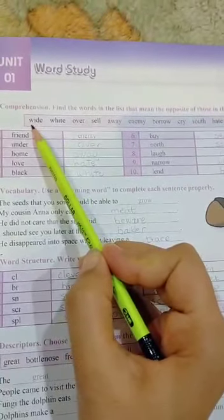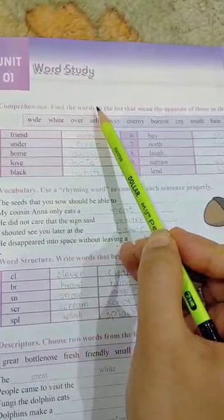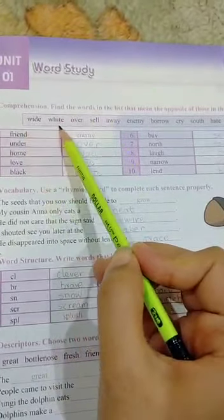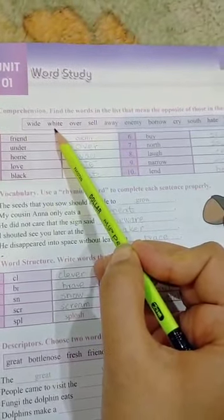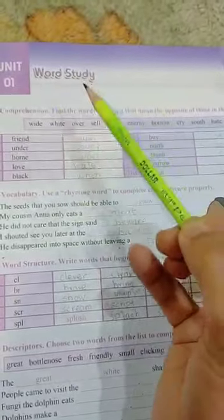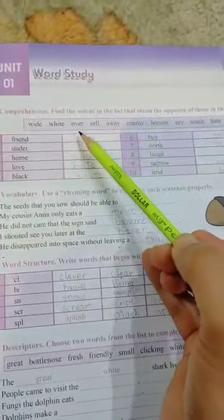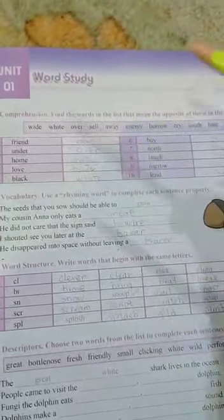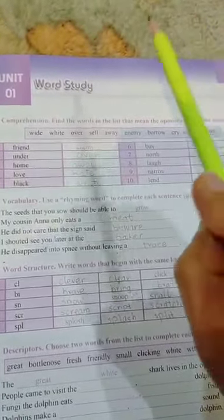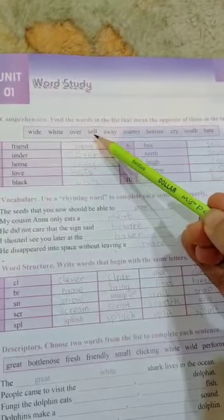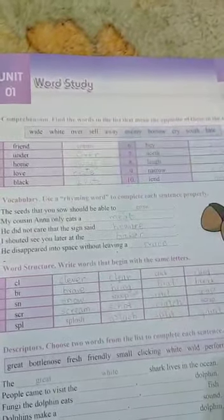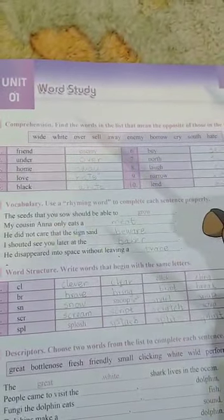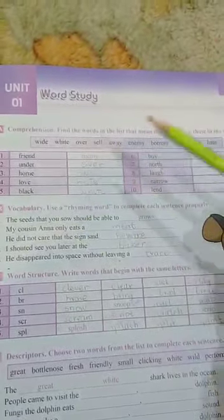White means the very large area. White is a color. Red, blue, green, white. Over means above, like something on the table. Over the table means on the table. Sell, to sell out something, to give something to someone and take the money means to sell out something.